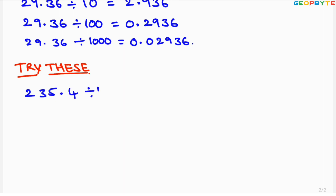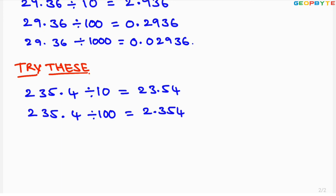Try this: 235.4 divided by 10 — shifting the decimal point left by one place gives 23.54. Next, 235.4 divided by 100 — shifting left by two places gives 2.354. Next, 235.4 divided by 1000 — shifting left by three places gives 0.2354.